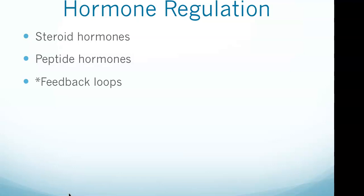The endocrine system consists of multiple organs that secrete hormones directly into the bloodstream to control body processes and maintain homeostasis. Hormones travel through the bloodstream and bind to receptors, triggering a response by the target tissue. The two main classes of hormones are steroid and peptide hormones. Steroid hormones are water soluble and bind to receptors on the surface of target cells, inducing a signaling cascade that leads to a rapid response.